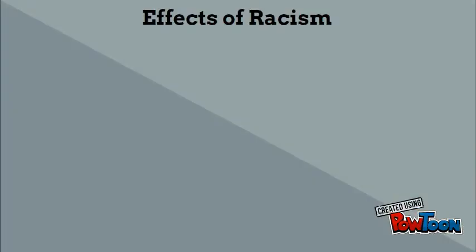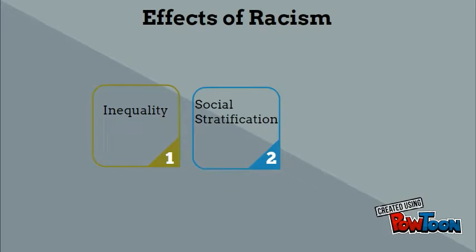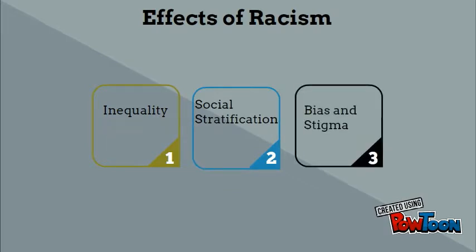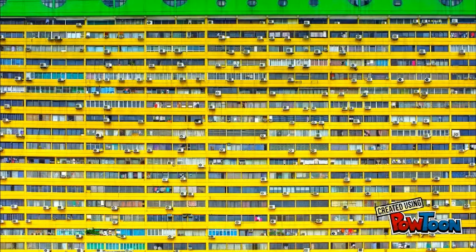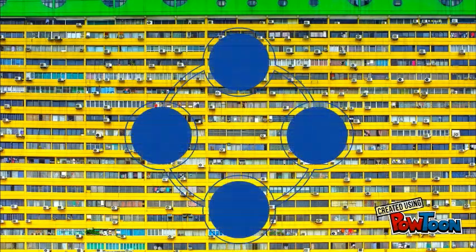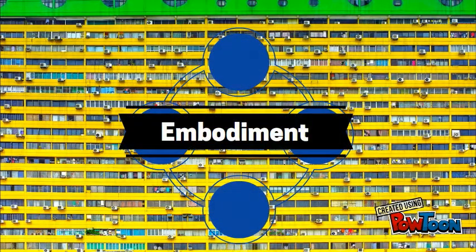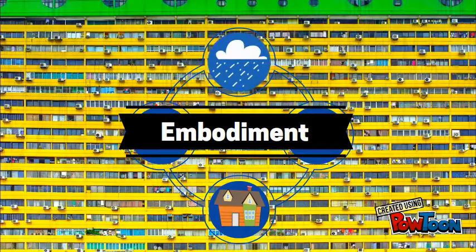The prevalence of racism in society has lasting effects on one's access to resources, one's standing in society, and becomes structuralized in forms of bias and stigma. Using the theory of embodiment, we can see how the negative effects of racism disproportionately affect different populations.